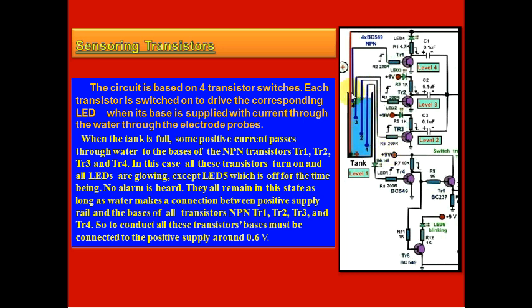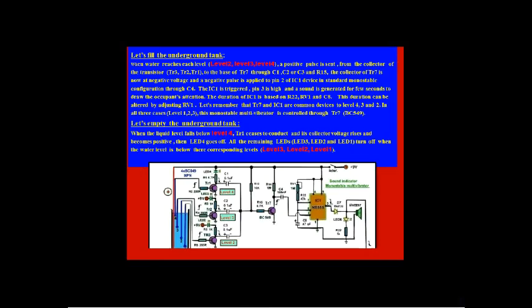When the tank is full, some positive current passes through water to the bases of transistors TR1, TR2, TR3, and TR4. In these cases, all these transistors turn on and all LEDs are glowing except LED5, which is off for the time being. No alarm is heard. They all remain in this state as long as water makes a connection between positive supply rail and the bases of all transistors.